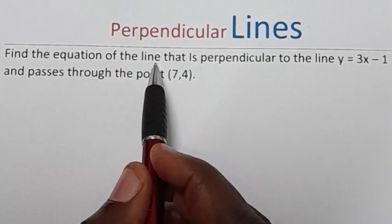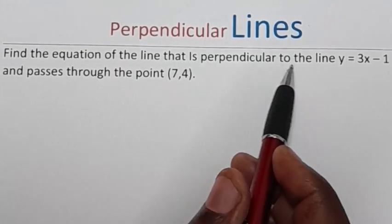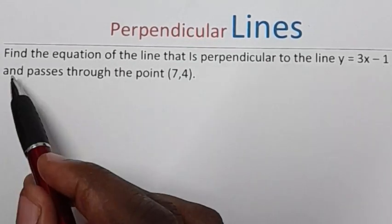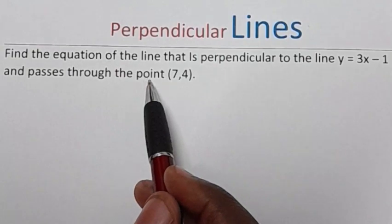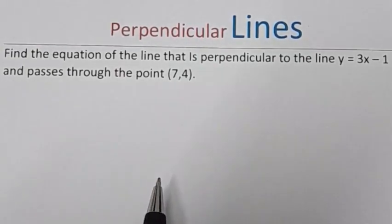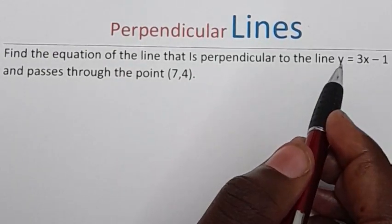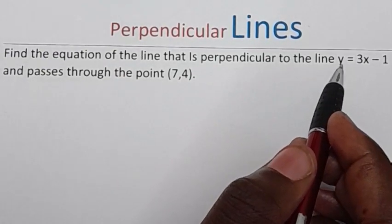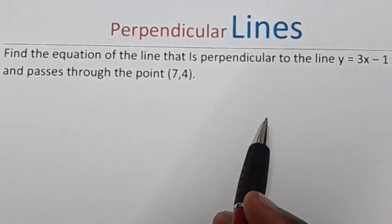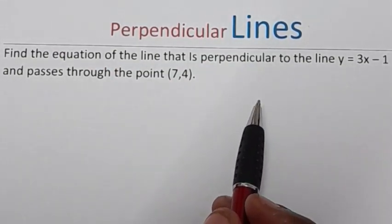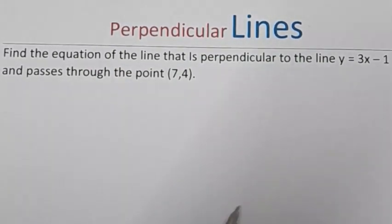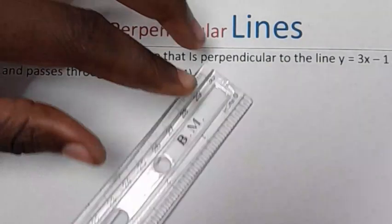The question is: find the equation of the line that is perpendicular to the line y = 3x - 1 and passes through the point (7, 4). They have given us the equation of one line and they want us to find the equation of another line — the second line — which is perpendicular to this.